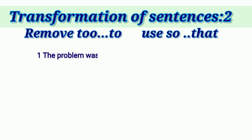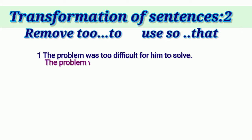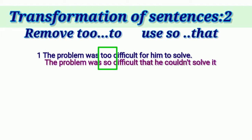Let us take a few more examples. 'The problem was too difficult for him to solve.' The answer is: 'The problem was so difficult that he could not solve it.' The changes: 'so' replaces TOO², and 'that he could not' replaces TO². 'That' is common in all sentences; 'he' replaces 'for him'; and 'could not' is used because the sentence is in past tense.